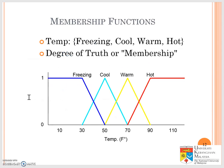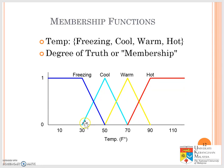So let's look at the membership function. Freezing could be 0 degrees — that means very cold — and then until we have 30 degrees Fahrenheit. This would be a combination between cool and freezing. This area is totally the freezing area, but this is a combination whereby the freezing is changing into a cool condition.